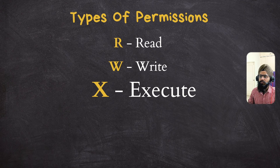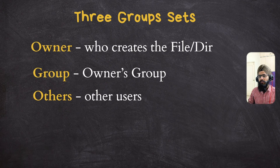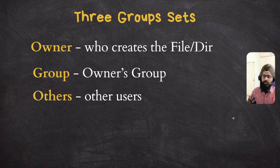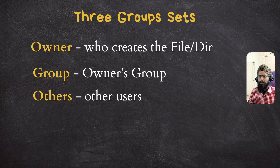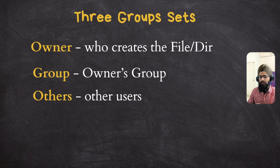For applying these permissions, you have to understand about the group sets, which are related to permissions. In Linux, we have three types of group sets: owner, group, and others. Owner means who created the file — the owner of that particular file. Group means the owner's group.